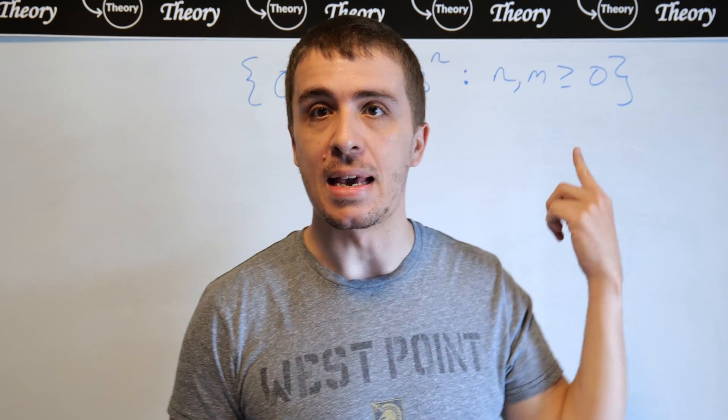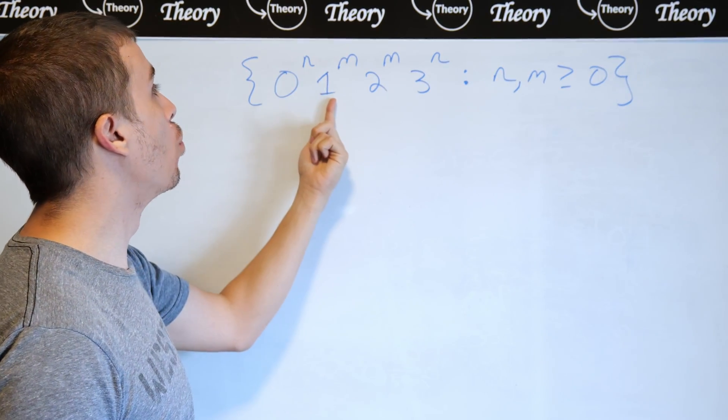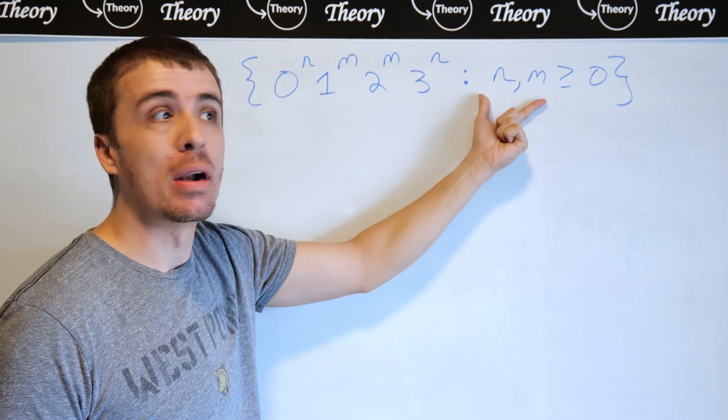Okay, so we're going to be making a context-free grammar for this language, which is 0 to the n, 1 to the m, 2 to the m, 3 to the n, where n and m are at least zero.